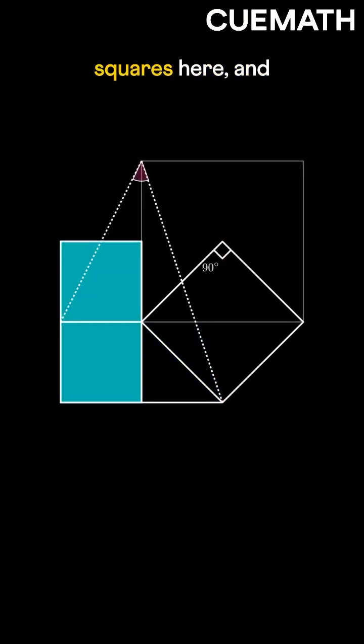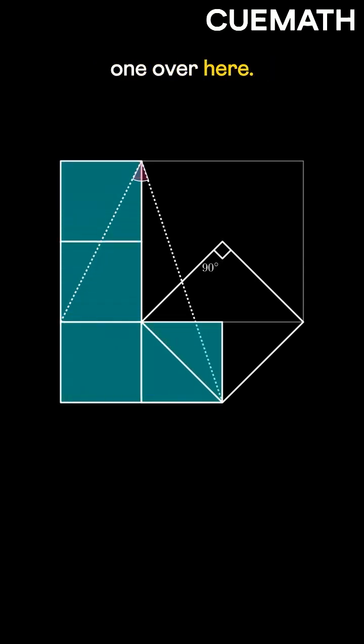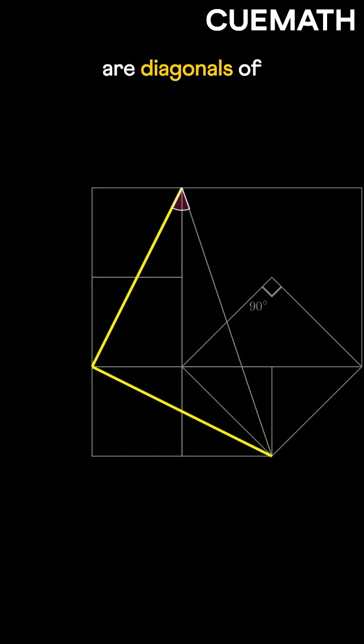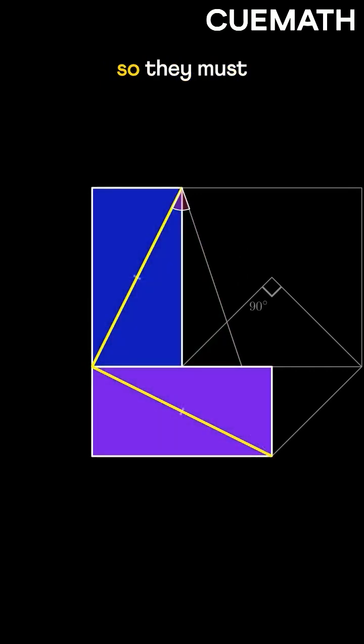So we can fit two small squares here and one over here. Joining these points forms a triangle. The two sides are diagonals of identical rectangles, so they must be equal.